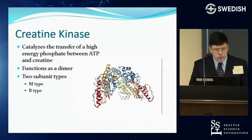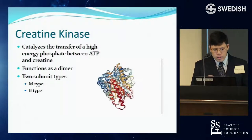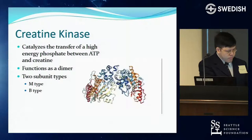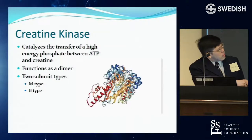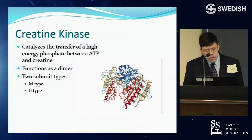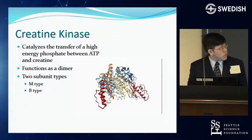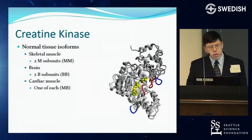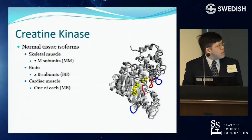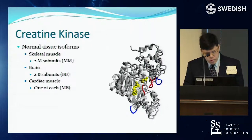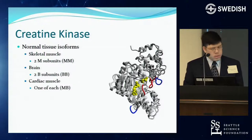Creatine kinase functions as a dimer with two subunits linked together. There are two flavors of subunits: an M-type and a B-type. Skeletal muscle CK has two M subunits, brain has two B subunits, and cardiac muscle has one of each — that's where the CK-MB cardiac fraction comes from.